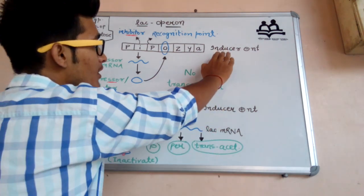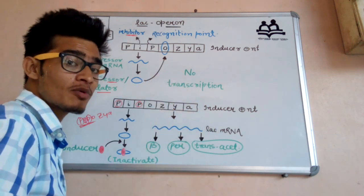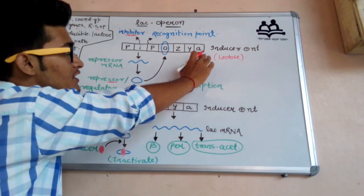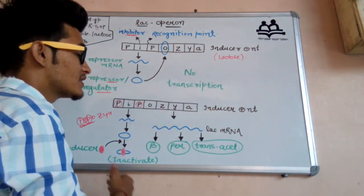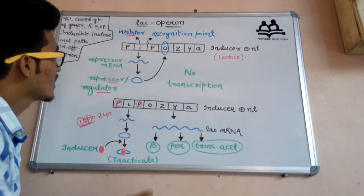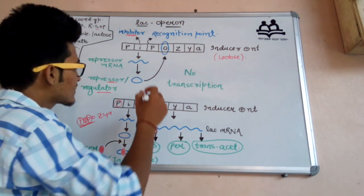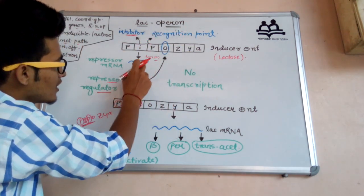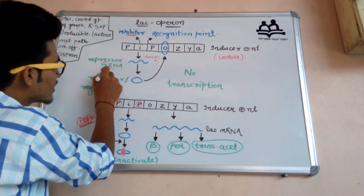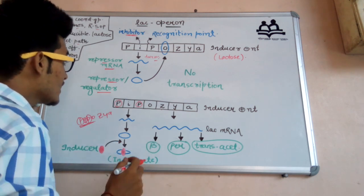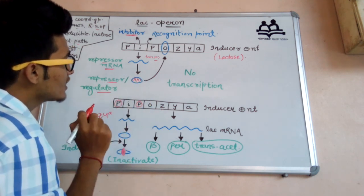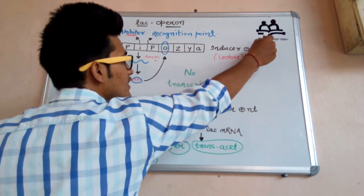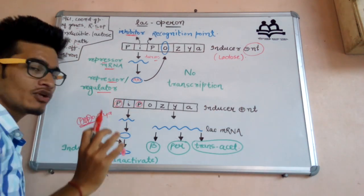There are two cases: Case 1, when the inducer is absent. The I gene will always transcribe, forming mRNA by transcription — that is, the formation of mRNA from DNA. That mRNA translates to form repressor mRNA, and that mRNA further translates to form regulator or repressor protein.